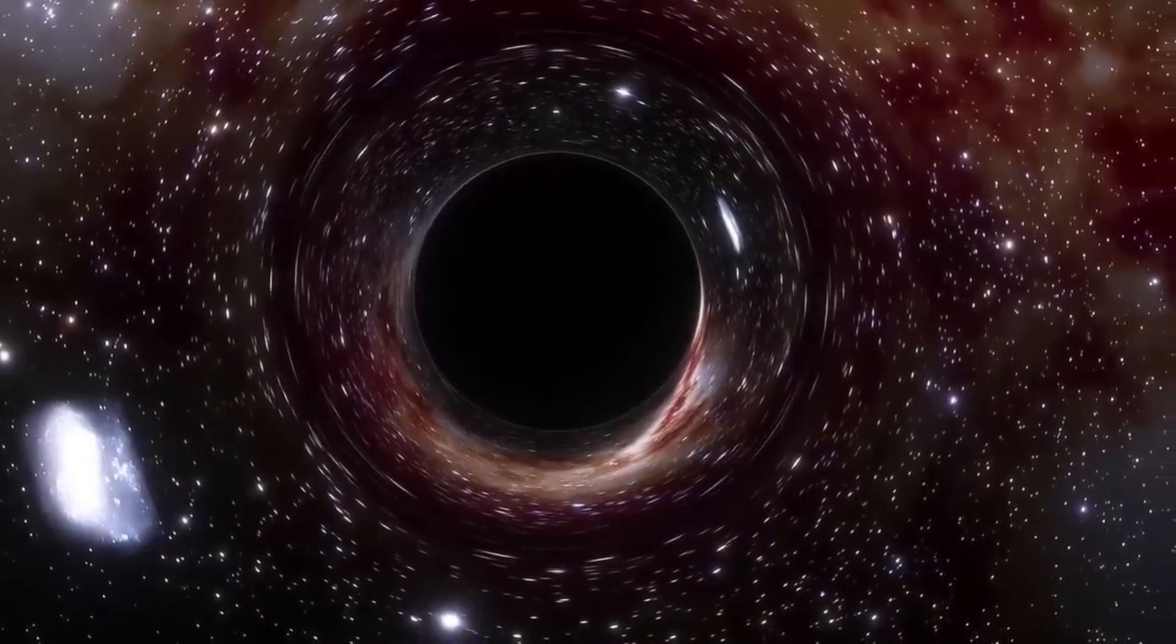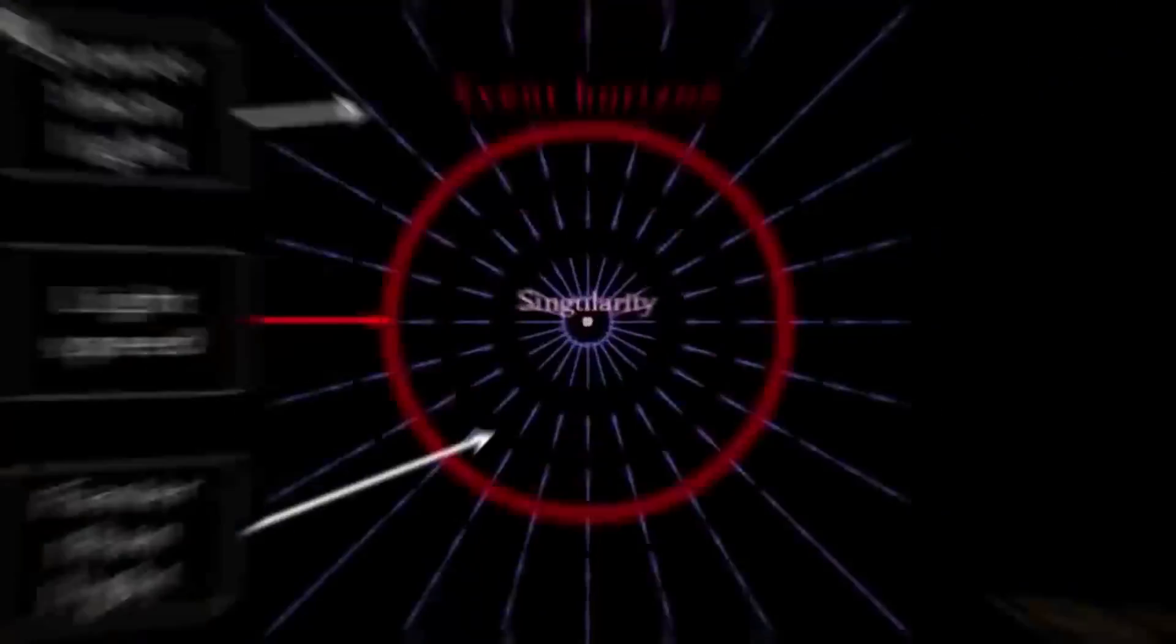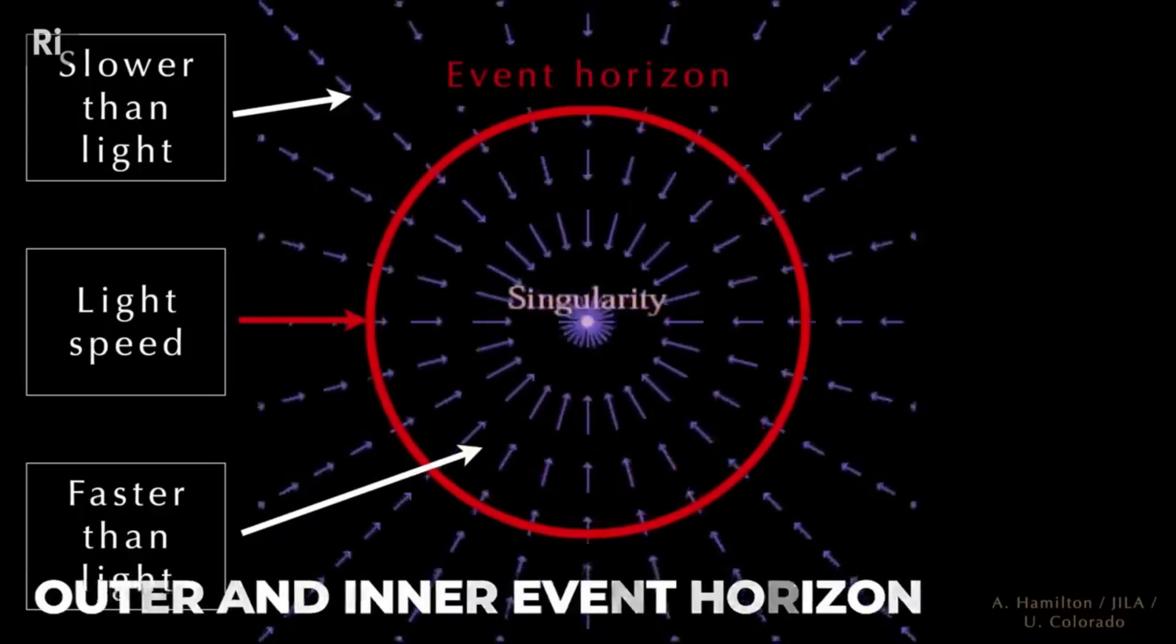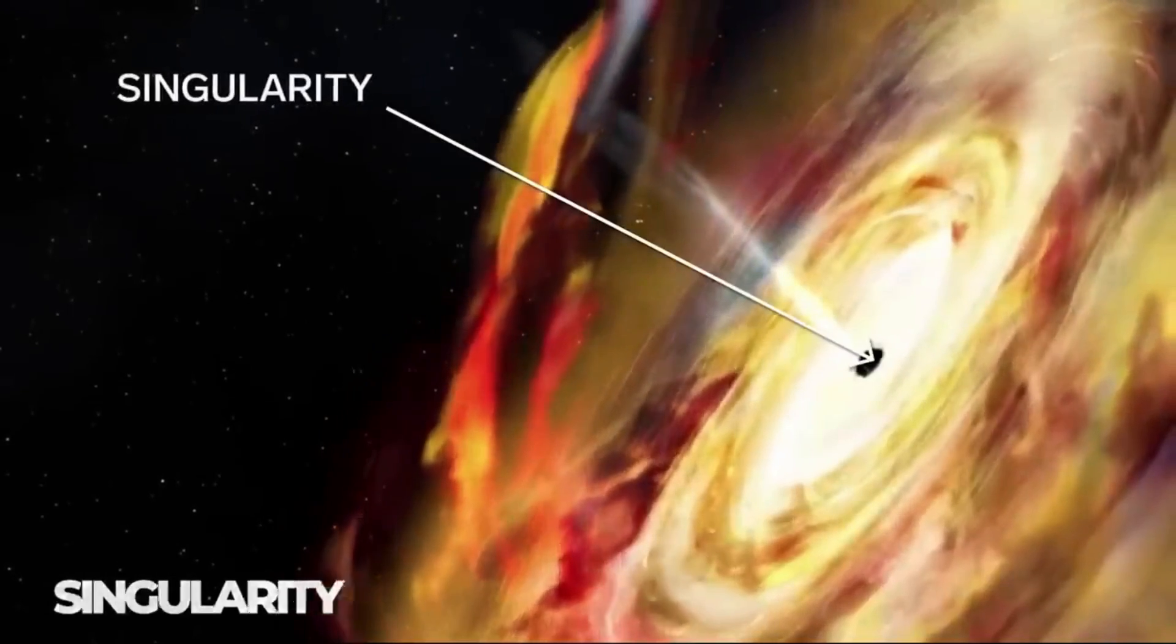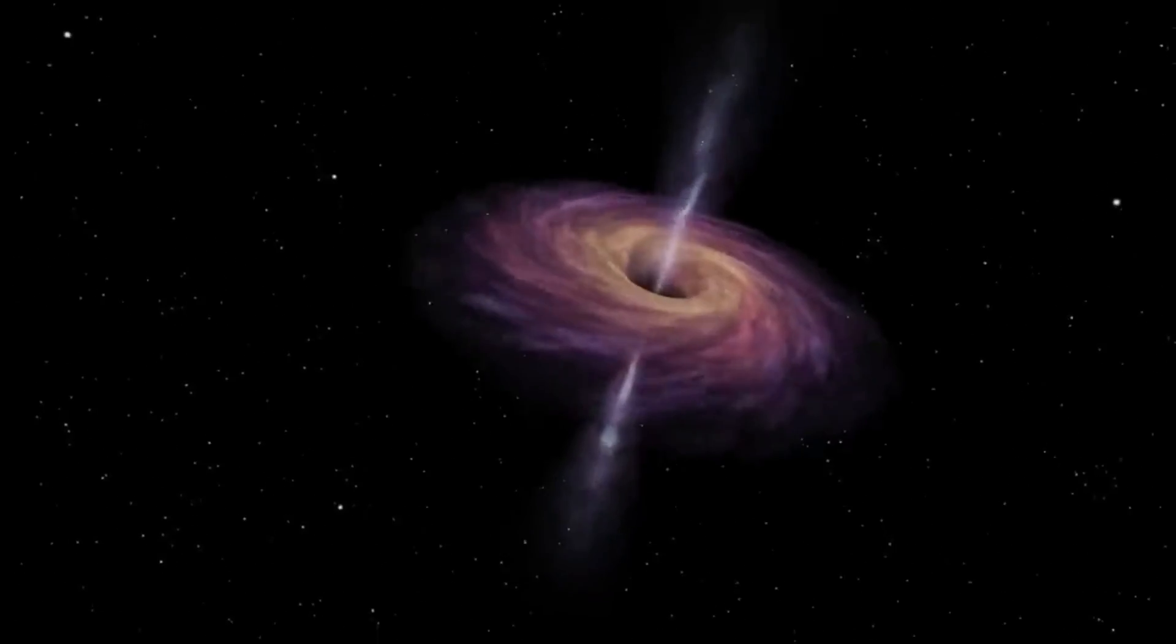Supermassive black holes, on the other hand, are the largest type of black hole. They can be millions or billions of times the mass of the sun and can be found at the heart of most galaxies, including the Milky Way. These black holes are some of the most powerful objects in the universe and are thought to play an important role in the evolution of galaxies.